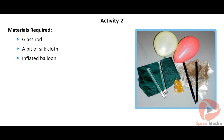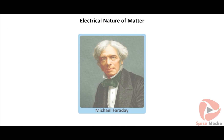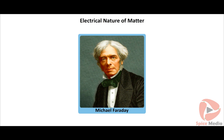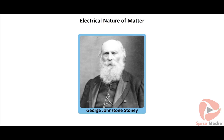This question of where charge comes from can be answered by knowing that an atom consists of charged particles. The first direct experimental evidence for the electrical nature of matter came from the experiments of Michael Faraday, who proved that electricity is composed of particles called atoms of electricity. George Johnston Stoney, an Irish physicist, first proposed the word 'electron' in 1891, laying the foundation for the eventual discovery of the electron by J.J. Thompson in 1897.